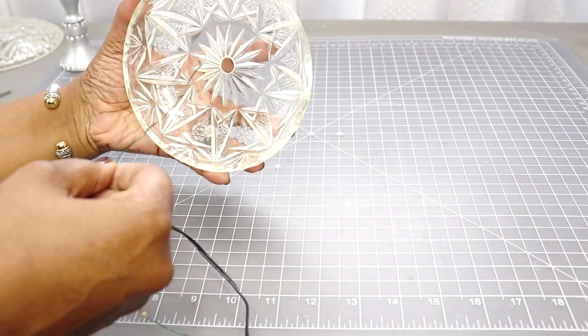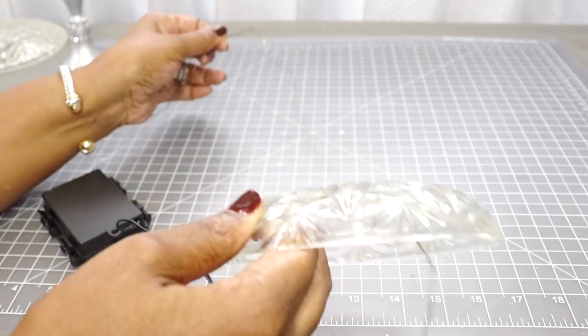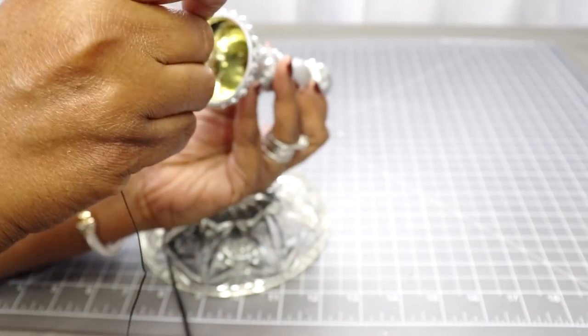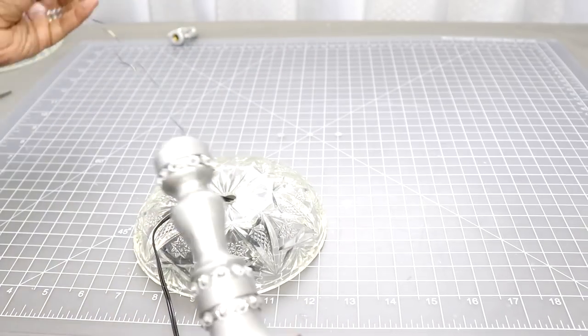So right now I'm going to insert the lighting wire through the base of the lamp and then I'm going to insert it through the middle portion of the lamp.